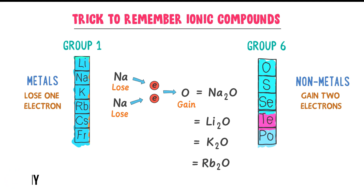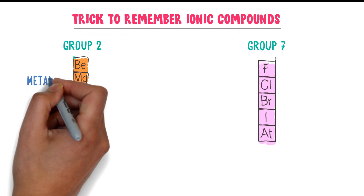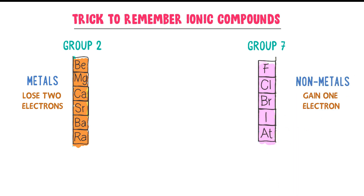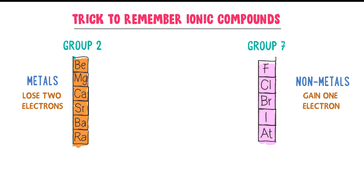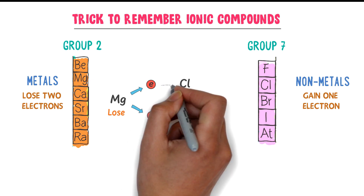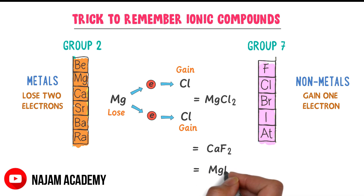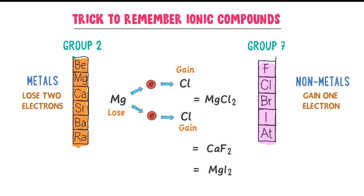Now let me teach you the fourth type of ionic compounds. Consider group 2 elements and group 7 elements. Group 2 elements lose 2 electrons and group 7 elements gain 1 electron each. For example, magnesium from metals and chlorine from non-metals — a single magnesium atom loses 2 electrons, while one chlorine atom gains 1 electron and another chlorine atom gains the other electron. So one magnesium atom and 2 chlorine atoms combine to give magnesium chloride. By this way we also get calcium fluoride, magnesium iodide, etc. Let's note down these different types of ionic compounds.